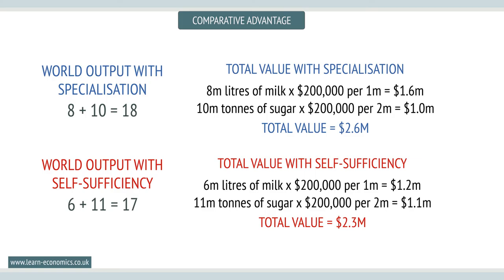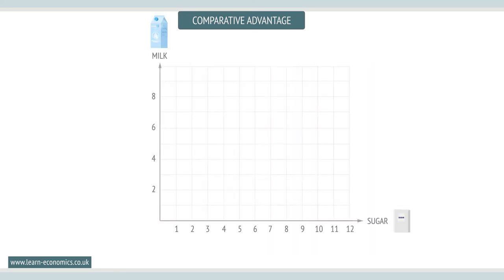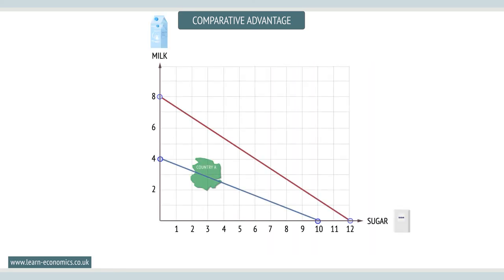Graphically, the gradient of the PPF reflects the opportunity cost of production. Different gradients mean different opportunity cost ratios, and hence specialization and trade will be beneficial.